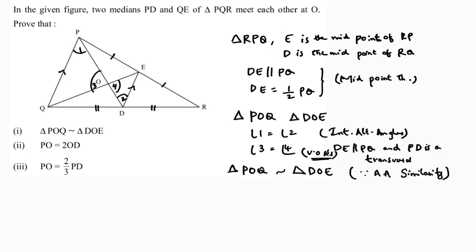Now writing sides proportional: PO by DO equals OQ by OE equals PQ by DE. We want the relation between PO and DO, and we already know about PQ and DE. Already I got DE is half of PQ, or PQ is twice DE.